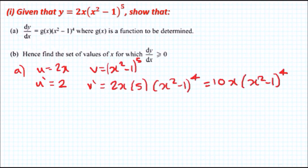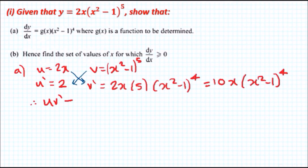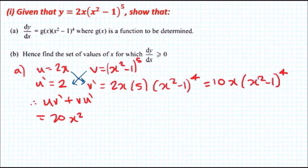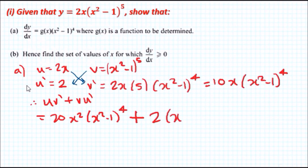By the product rule, all we need to do is connect these. The product rule tells us it's going to be u·v prime plus v·u prime. So the final solution: u·v prime plus v·u prime equals 2x multiplied by 10x, giving 20x², multiplied by (x² - 1) to the power of 4, plus v times u prime, which is (x² - 1)⁵ times 2.